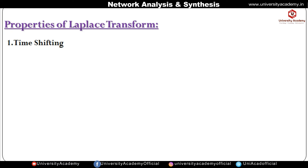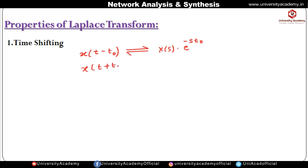Now let us see the properties of the Laplace Transform. The first property is time shifting. If x(t − t₀) is given, where t − t₀ indicates time shifting, then its Laplace Transform is X(s)·e^(−s·t₀). So you multiply one extra term e^(−st₀) due to time shifting — the sign stays the same. If it is x(t + t₀), then the Laplace Transform is X(s)·e^(+st₀).